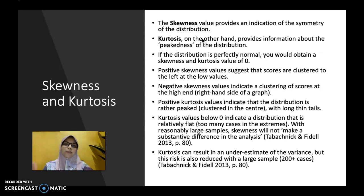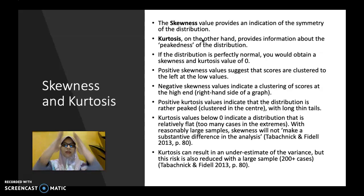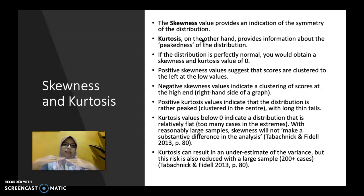Positive skewness values suggest that scores are clustered to the left at the low values, and negative skewness values indicate a clustering of scores at the high end or right-hand side of a graph. So if the bell-shaped curve is skewed to the left, it is positive skewness, and if skewed to the right, it is negative skewness. Positive kurtosis values indicate the distribution is rather peaked, clustered in the center with long thin tails, whereas a kurtosis value below 0 indicates a distribution that is relatively flat.